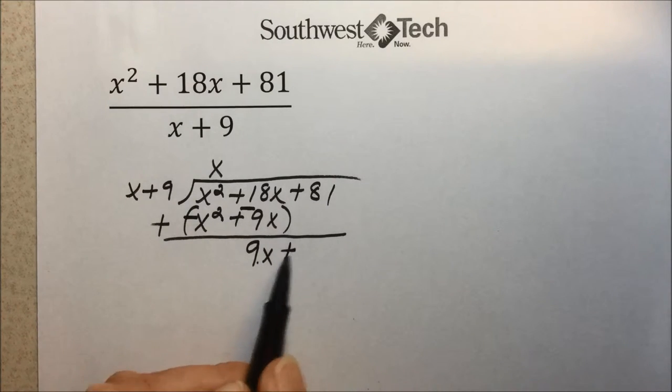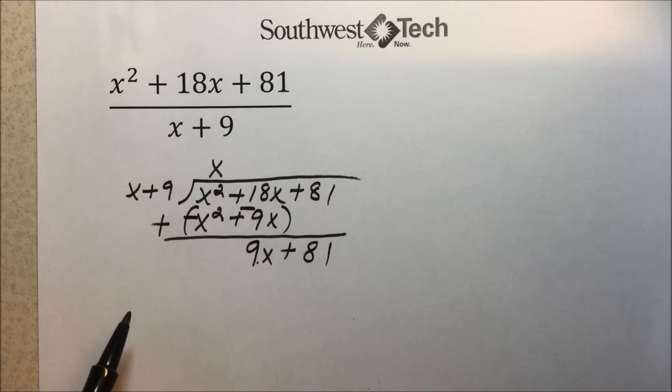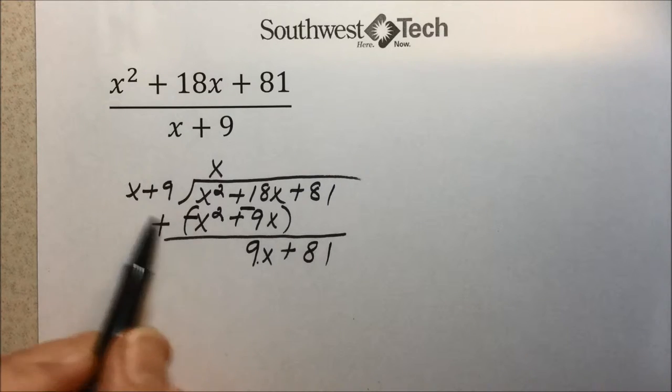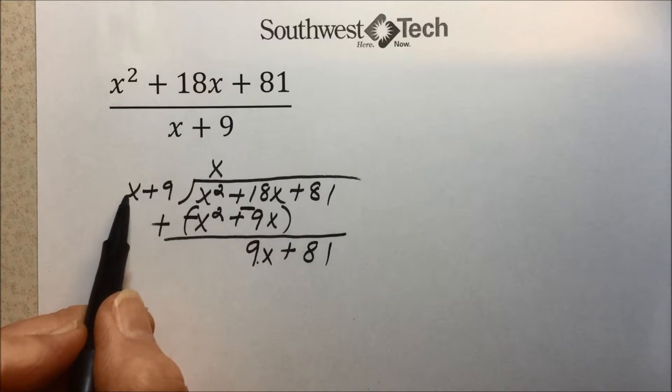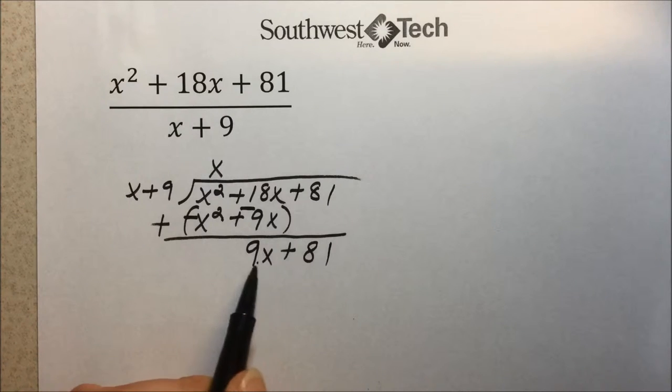x squared plus a negative x squared cancels out, and 18x plus a negative 9x is 9x. If you can remember subtraction of everything here, great. Then just with normal long division, you bring down your next quantity. We go back, ask ourselves,